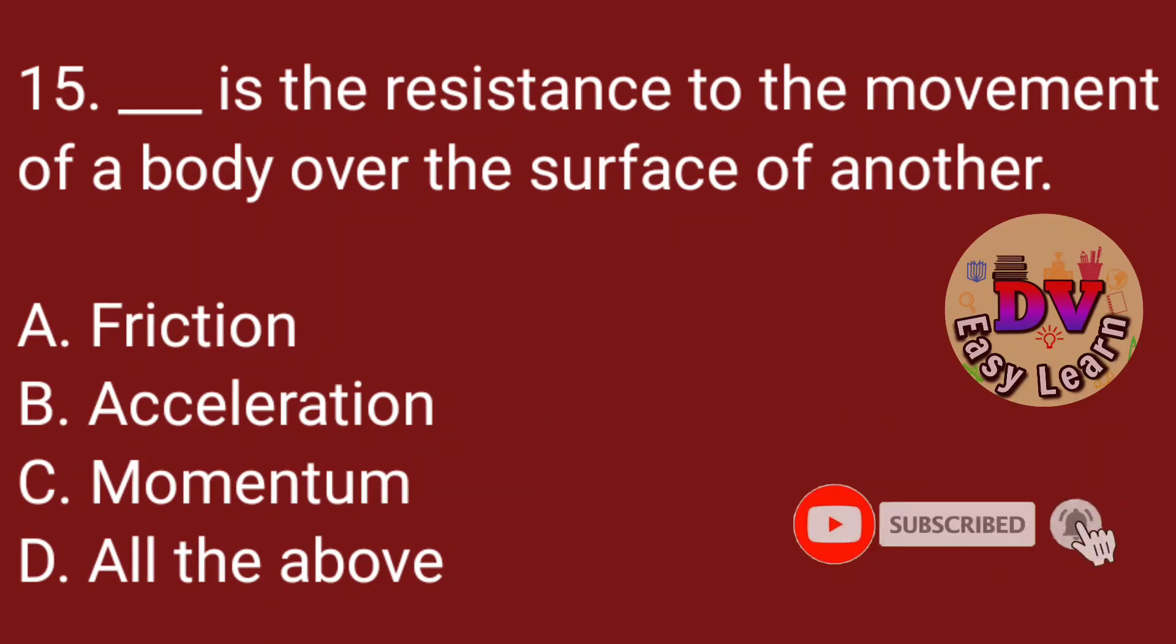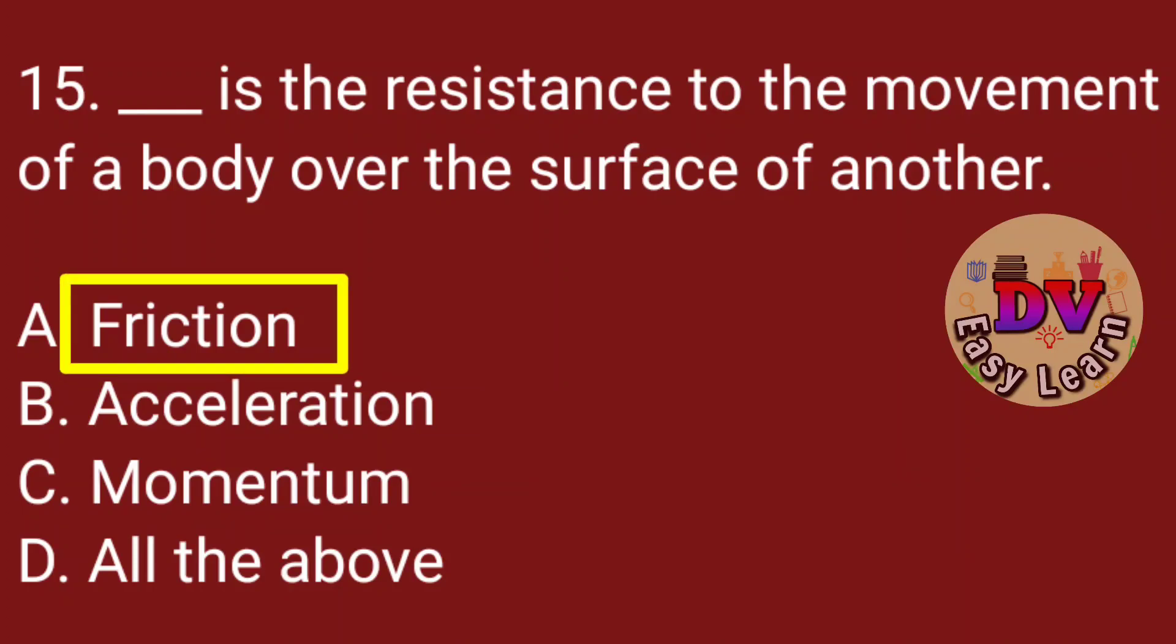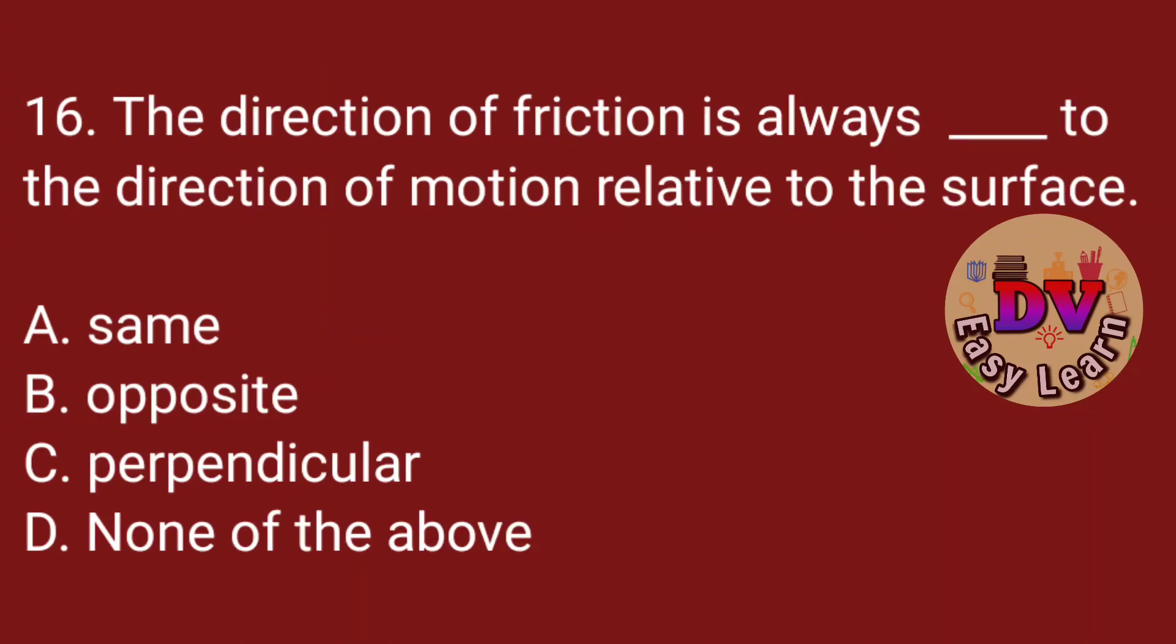Question number 15. Dash is the resistance to the movement of a body over the surface of another. The direction of friction is always dash to the direction of the motion relative to the surface. Correct answer: opposite.